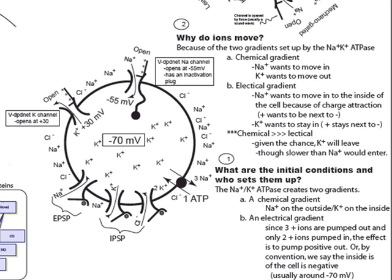So now the sodium potassium ATPase has set up these initial conditions. And hopefully we can see that ions want to move. But let's get more specific about why do ions want to move. That's number two here. It comes down to those two gradients set up by the sodium potassium ATPase: the chemical gradient and the electrical gradient.